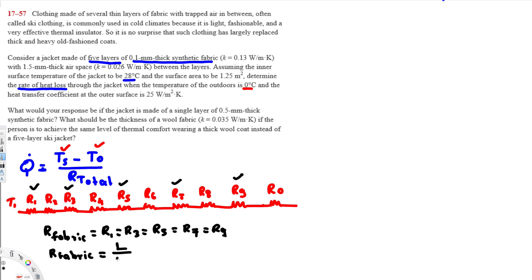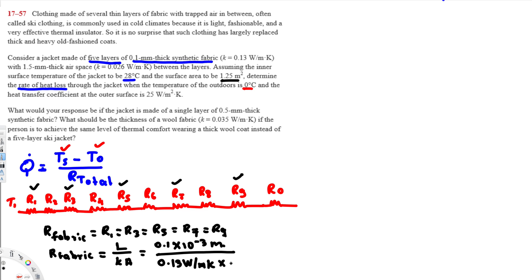To find R_fabric, we use the conduction resistance formula L/(kA). The thickness of the fabric is 0.1 mm = 0.1 × 10⁻³ m, the thermal conductivity of fabric is k = 0.13 W/m·K, and the area A = 1.25 m². Calculating this gives R_fabric = 0.0006°C/W.